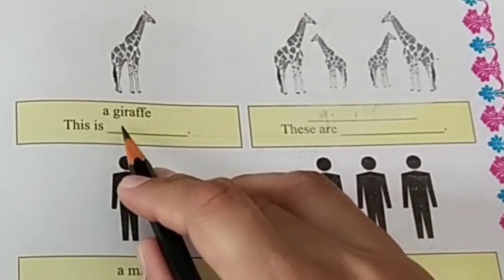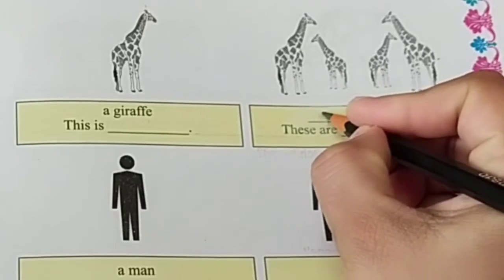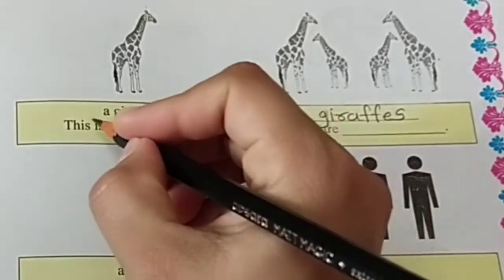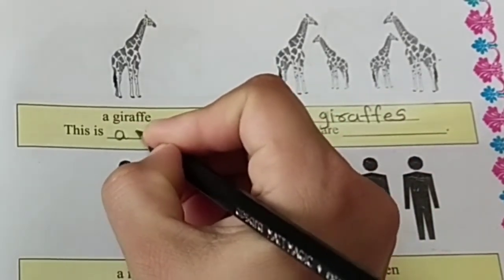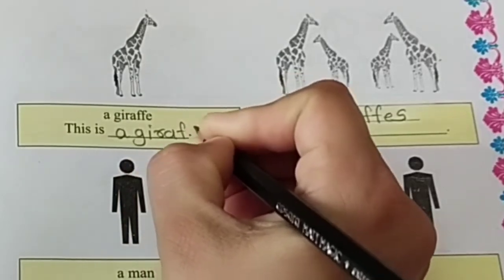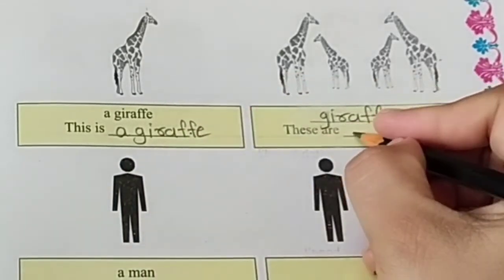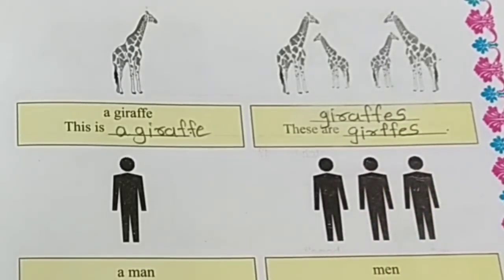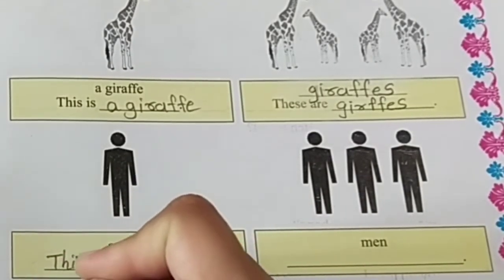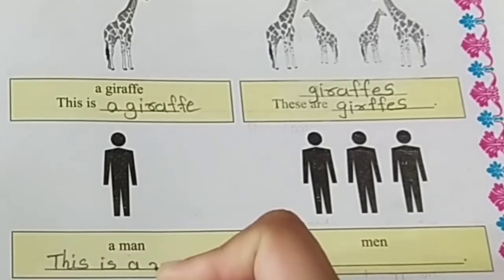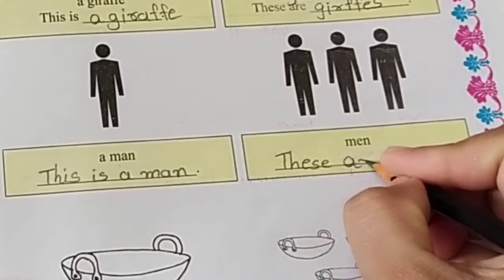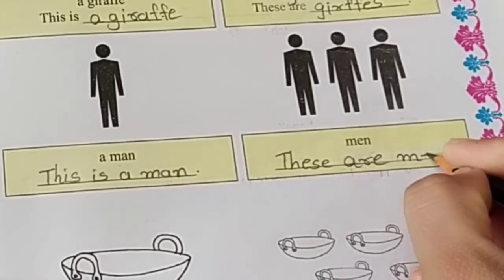A giraffe. Giraffes. This is a giraffe. These are giraffes. A man. Men. This is a man. These are men.